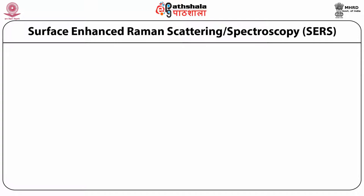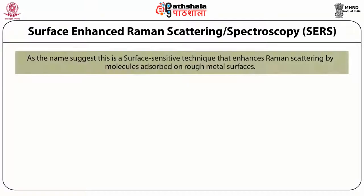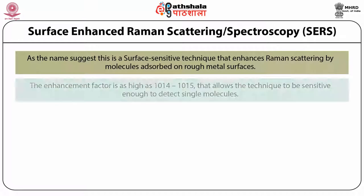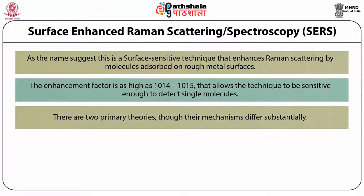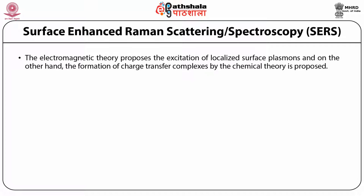Surface Enhanced Raman Scattering or Spectroscopy (SERS): As the name suggests, this is a surface-sensitive technique that enhances Raman scattering by molecules absorbed on rough metal surfaces. The enhancement factor is as high as 10^14 to 10^15, which allows the technique to be sensitive enough to detect single molecules. There are two primary theories, though their mechanisms differ substantially: the electromagnetic theory proposes the excitation of localized surface plasmons, and the chemical theory proposes the formation of charge transfer complexes.